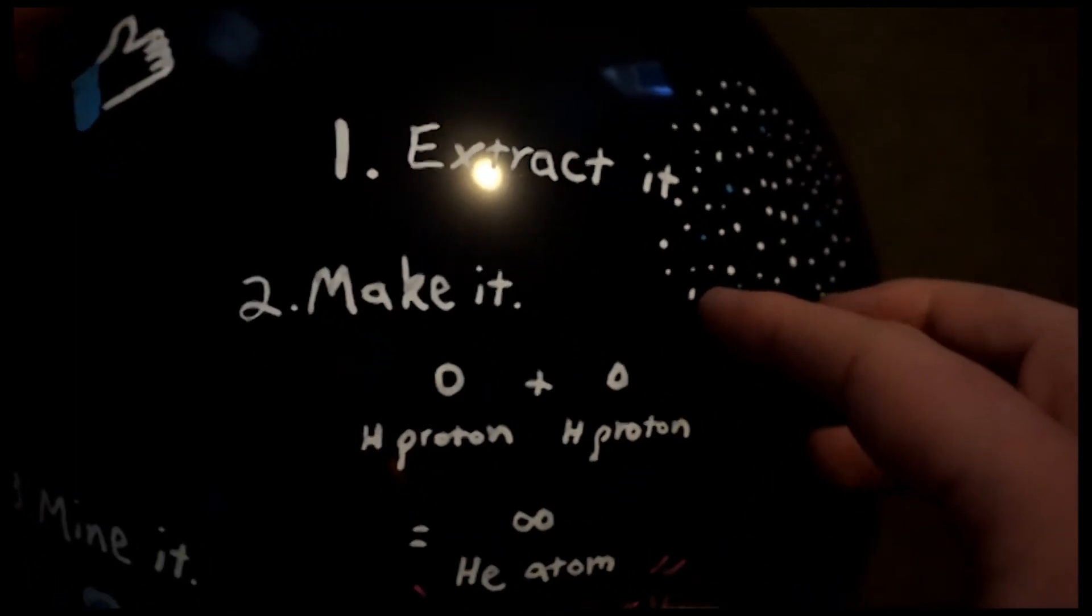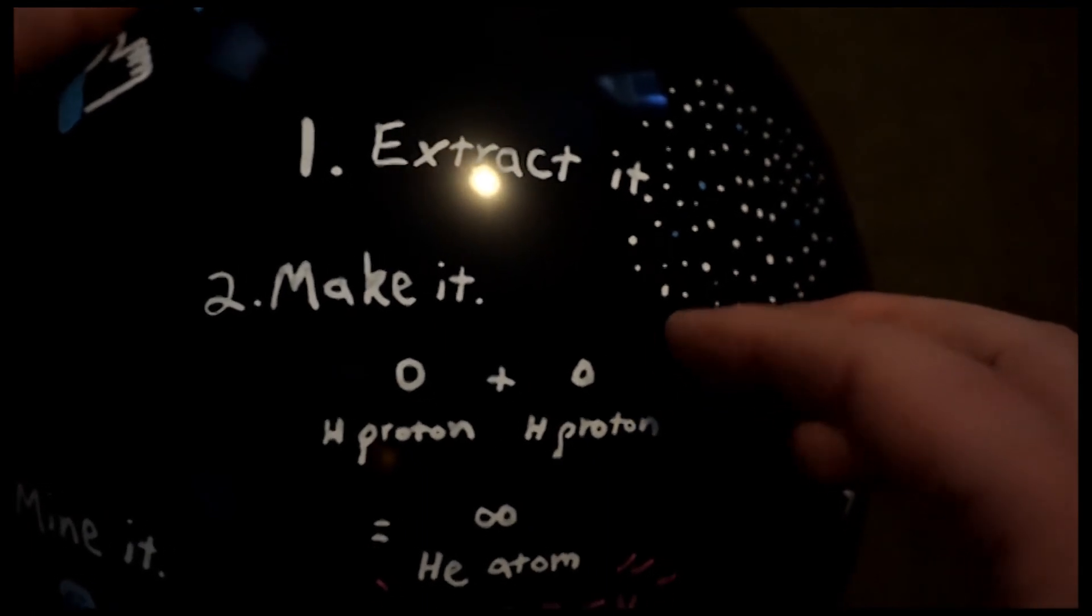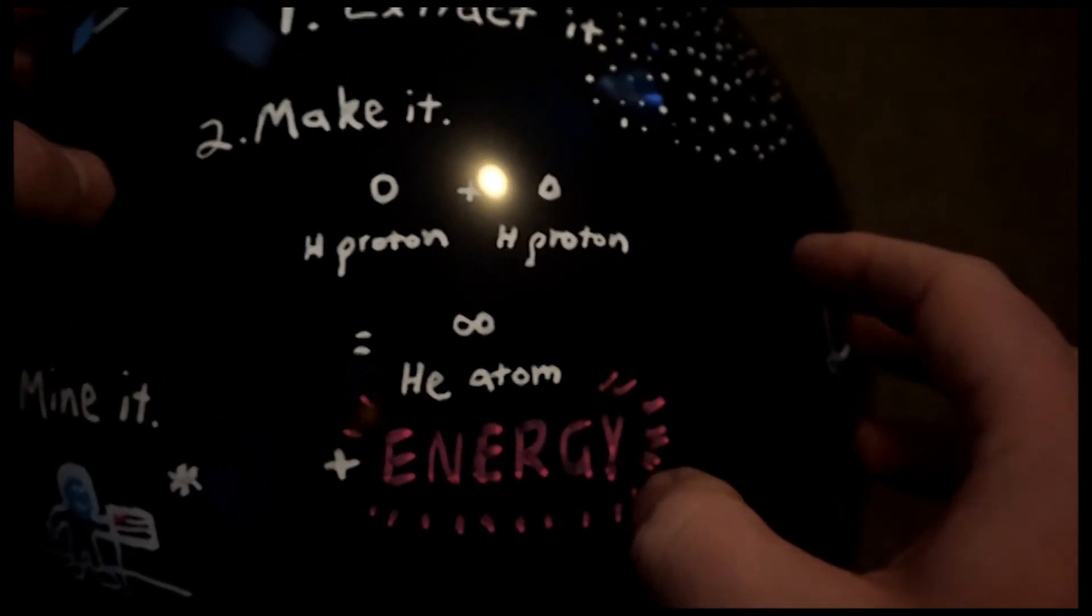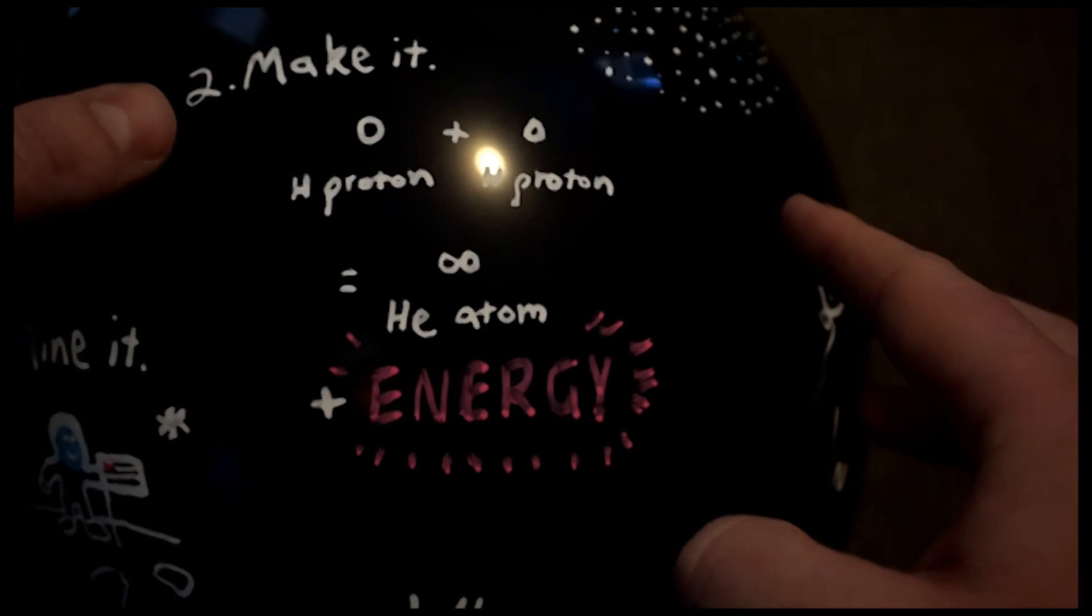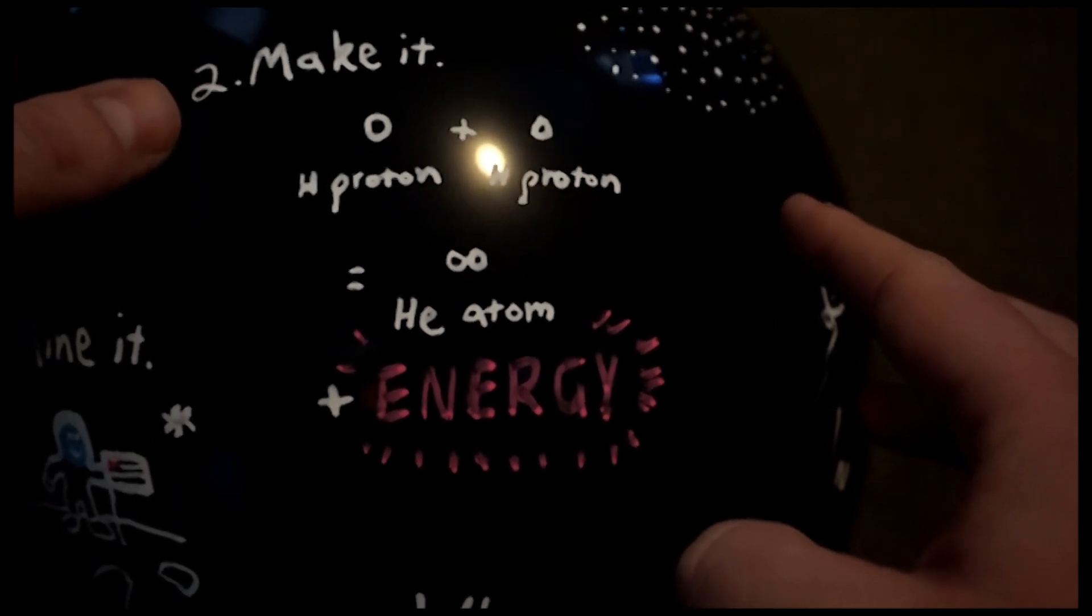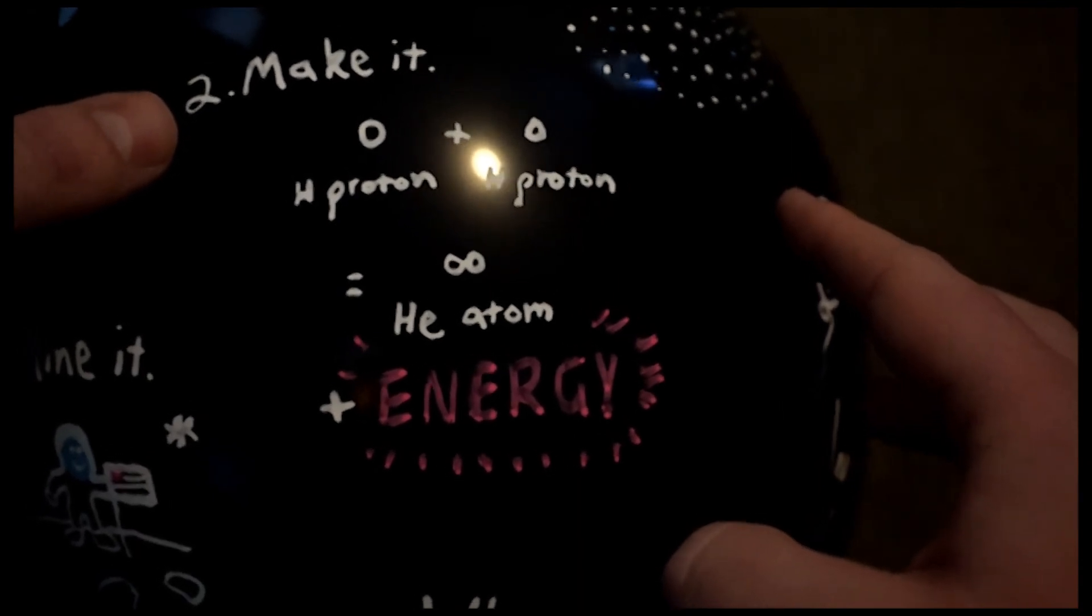Secondly, we could try making it. Every second, the core of the sun combines hundreds and hundreds of tons of hydrogen atoms together. They fuse together to form helium and heaps of energy. And that's how the sun releases its energy, the nuclear reactions. And we could scale that down to Earth, and it would produce a lot of energy for us, but it wouldn't produce much helium. It would produce a tiny fraction of what the Earth needs.